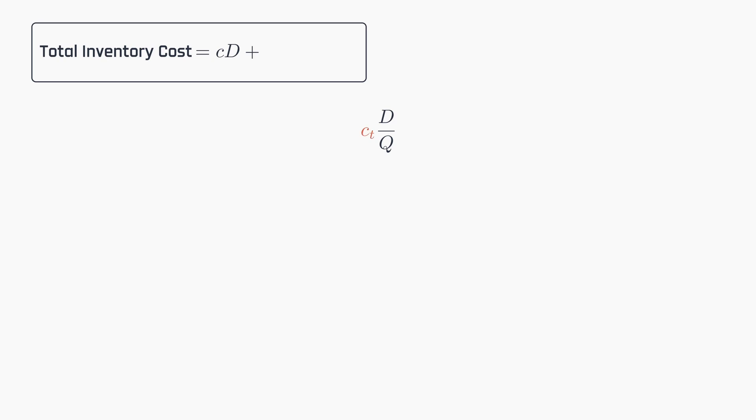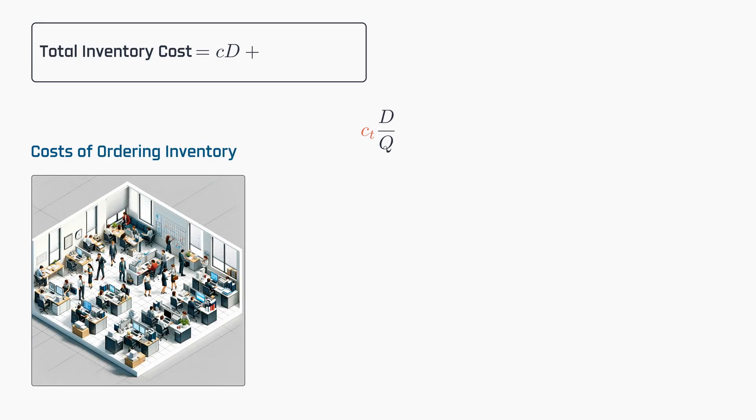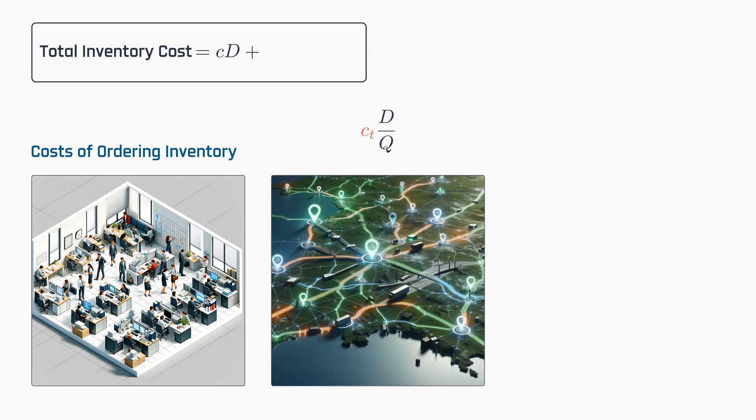But what are the fixed costs of ordering inventory? Consider the resources invested in a purchase process: the buyer's time, communication expenses, the use of procurement software. There is also paperwork and invoicing. The transportation of the items might require fixed delivery rates, independent of the lot size.